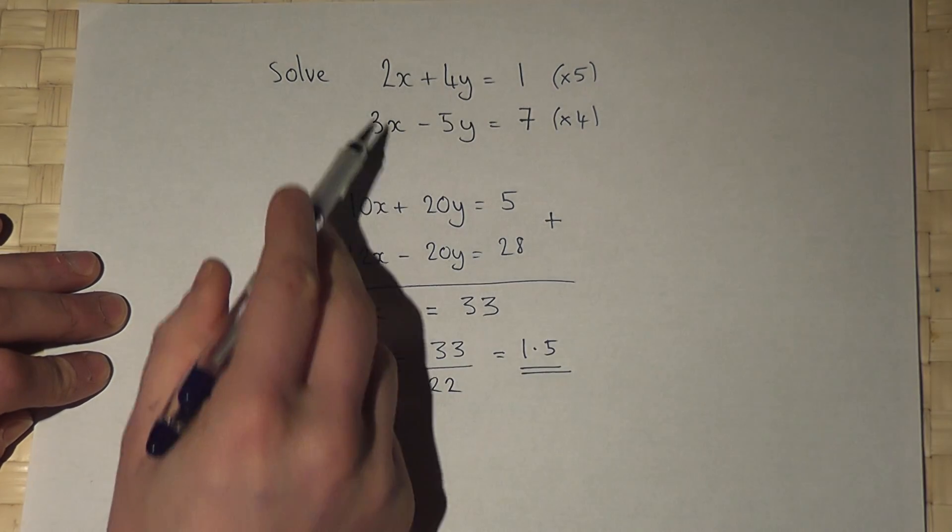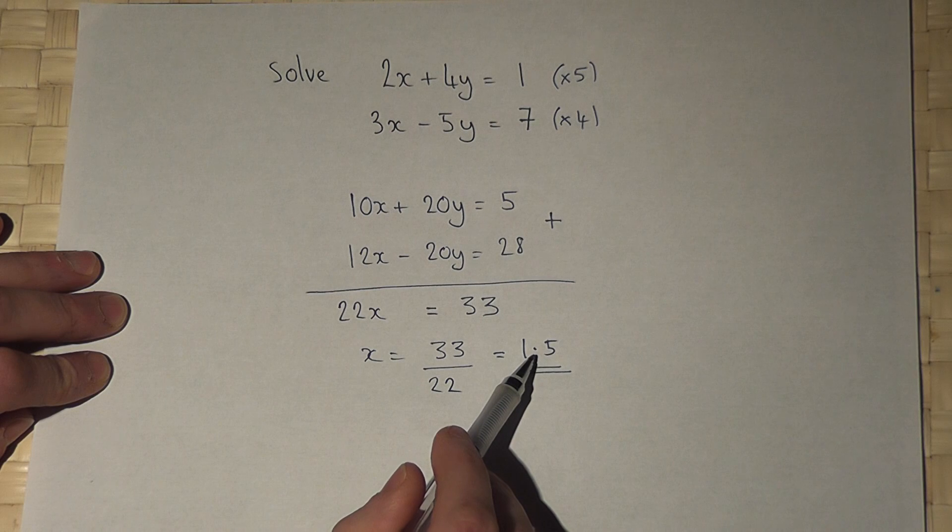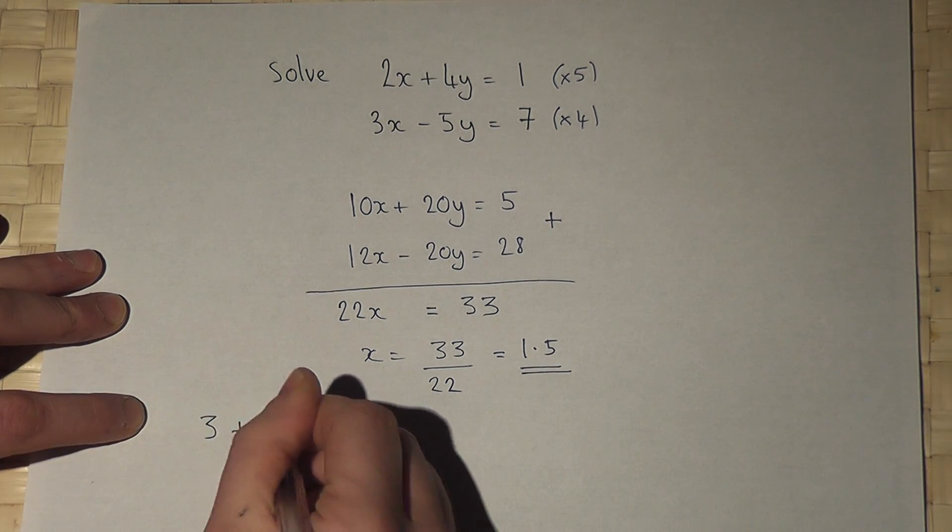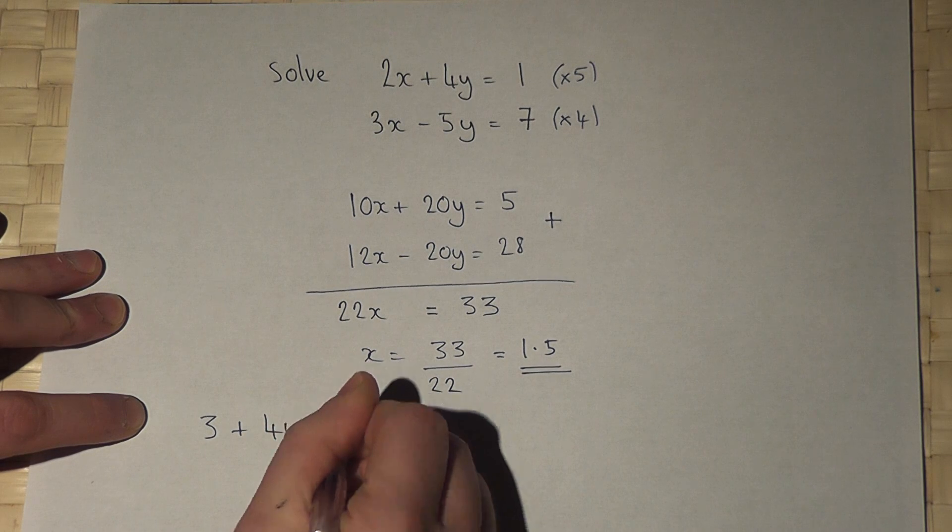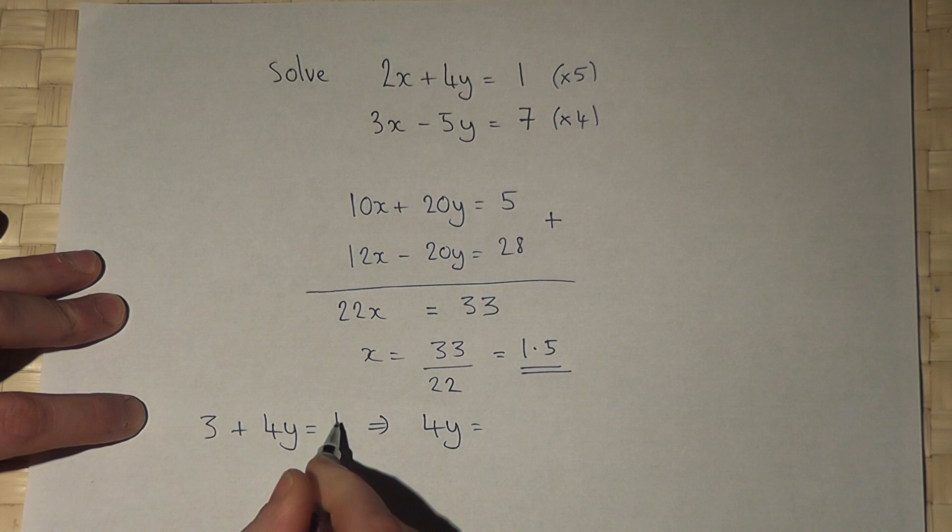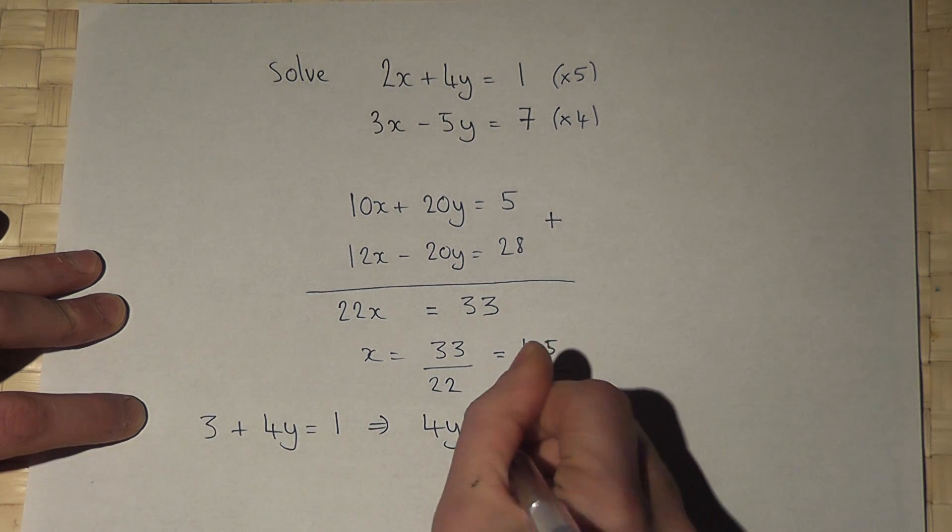So 2 lots of x, 2 times x, 2 times 1.5 is 3. So 3 plus 4y equals 1. This means that 4y equals 1 take 3, which is minus 2.